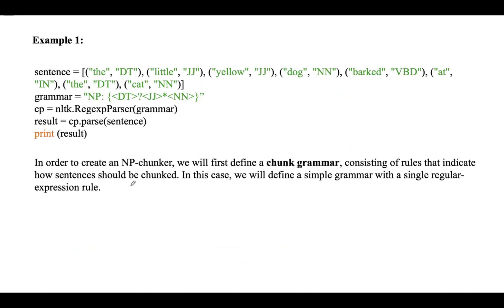Let's look at an example: creating an NP chunker. Assume the given sentence is 'the little yellow dog barked at the cat.' When a sentence is given, you first need to generate tokens and assign respective POS tags to each token. Here, 'the' is a determiner, 'little' and 'yellow' are adjectives, and 'dog' is a noun. A noun phrase is a collection of a determiner, adjectives, and a noun. The star symbol indicates zero or more occurrences of a tag.